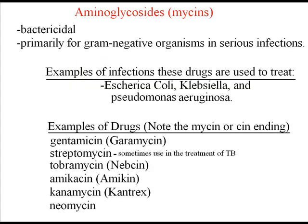First, we're going to start with aminoglycosides. Aminoglycosides are a bactericidal agent, meaning they kill microorganisms. They are primarily used for gram-negative organisms and serious infections, but have been known to be used for gram-positive organisms. However, because of how toxic they are in comparison to other drugs, they are not as likely to be used for gram-positive organisms. Common infections aminoglycosides have been used for include E. coli, Klebsiella, and Pseudomonas aeruginosa.